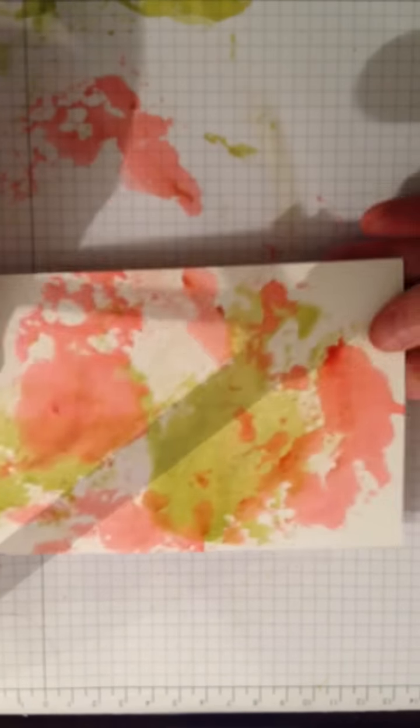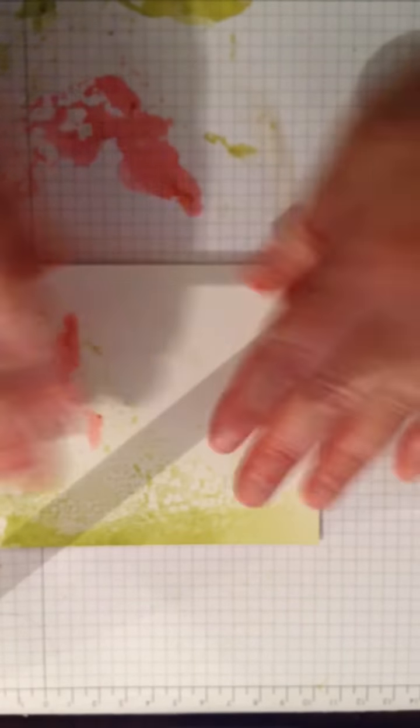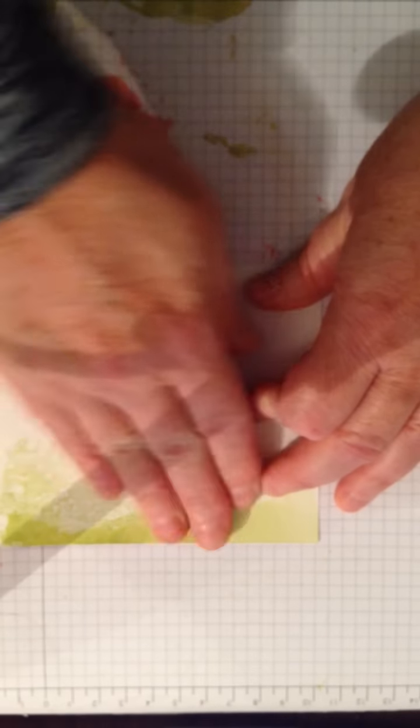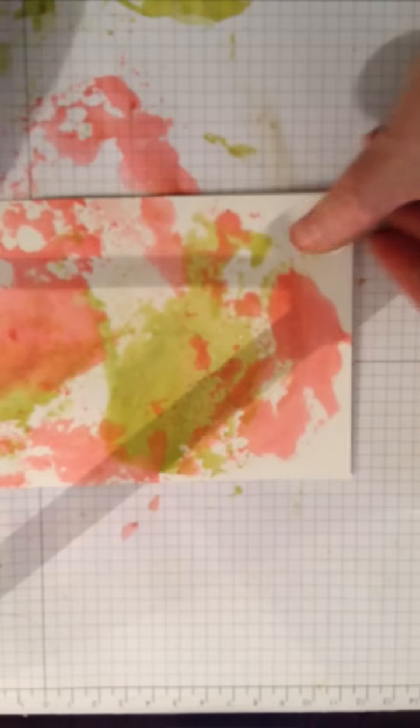Move that out of the way, move that out of the way. Turn it upside down because you want it to be really dry. Not in the wet patch. There you go.